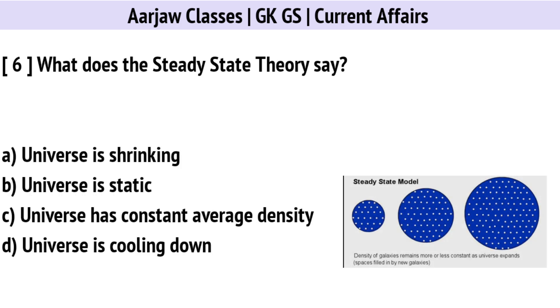What does the steady state theory say? Correct option is C: The universe has a constant average density.